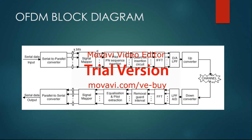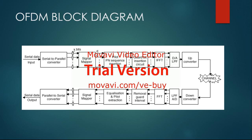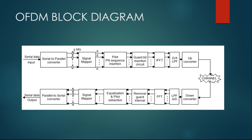While the data is being transmitted, you get additive white Gaussian noise added to the data, because you're transmitting data through the channel and there are many possibilities that noise gets added to it. On the receiver side, you have a down converter and a fast Fourier transform to get back the signal, along with removal of the guard bit and conversion of parallel to serial data so that you get the data as required.